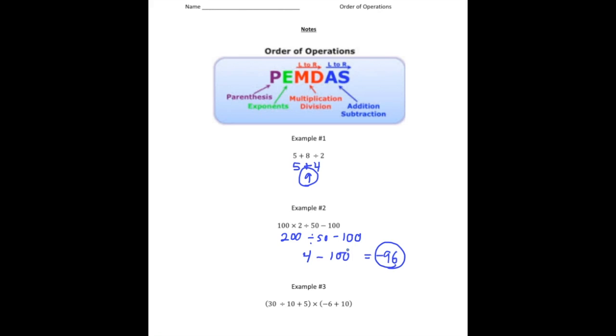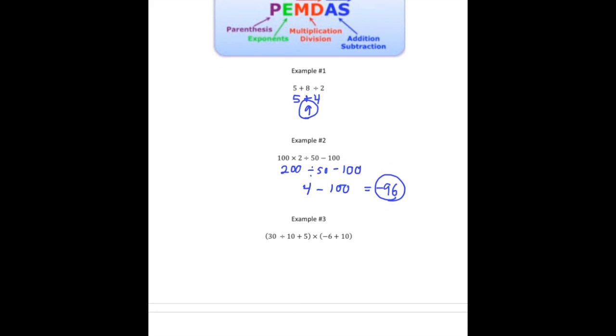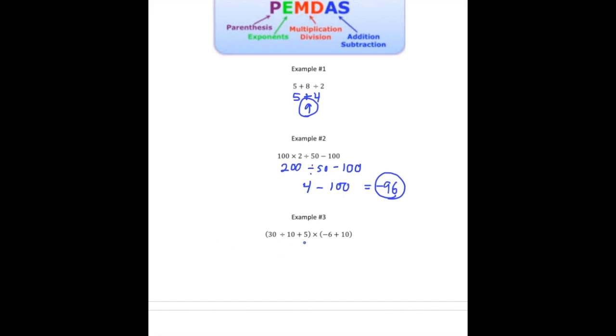One last one. Here we have two separate sets of parentheses. And notice PEMDAS begins with a P. And any time you have parentheses, you follow the order of operations inside each parentheses. So the first one we have, 3 divided by 10 and then plus 5. So I'm going to actually box this in and treat this like its own separate little problem.